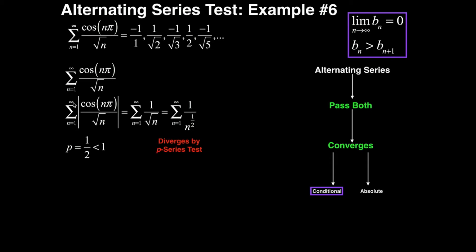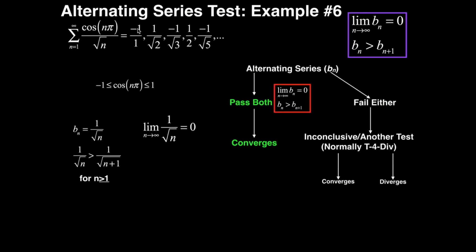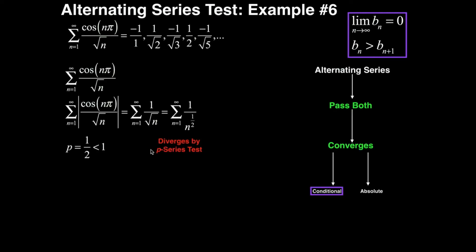The series from n equals 1 to infinity of the absolute value of cosine of n pi over the square root of n simplifies to the series from n equals 1 to infinity of 1 over square root of n. Since our specific values of n make cosine either negative 1 or 1, the absolute value is just positive 1 in every term, giving us 1 over square root of n, which we can rewrite as 1 over n to the 1/2.